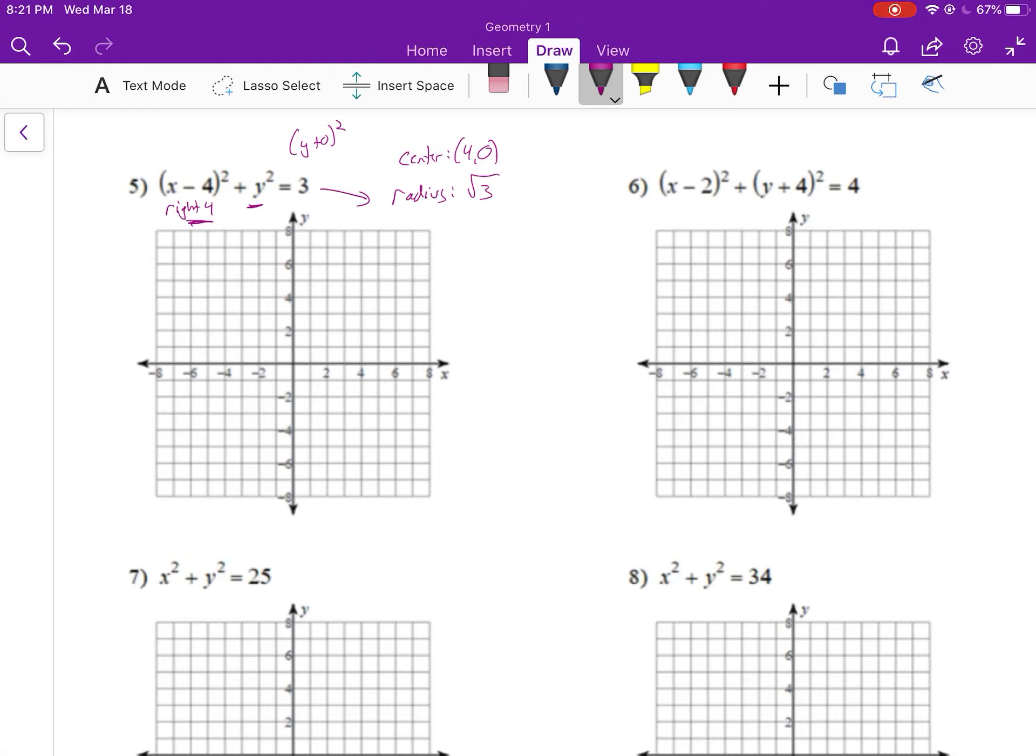Well, the square root of three is about 1.7. And so we're going to start at our center, which is at (4, 0). And we just have to estimate here. We're going to go right 1.7, up 1.7, left 1.7, and down 1.7, and sketch in the circle.